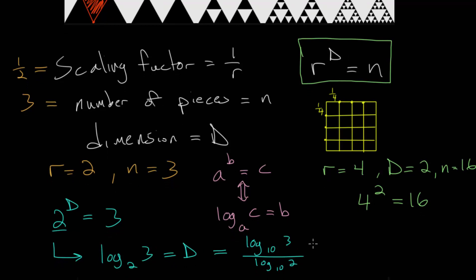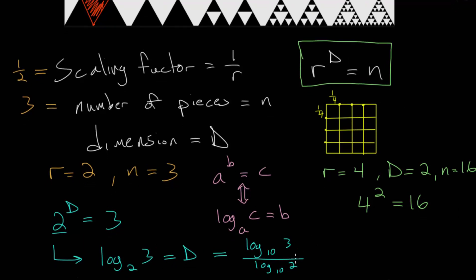Remember with logarithms that we usually omit the base when it is the common log, when it's base 10. So we can just write this as log 3 over log 2, and we can just plug this into our calculator. Or we can use base e, which if we're using base e, that's the base of the natural log. So we could also write this as the natural log, or ln of 3 divided by ln of 2.